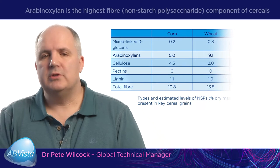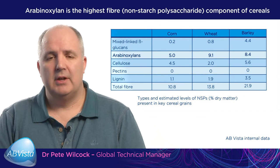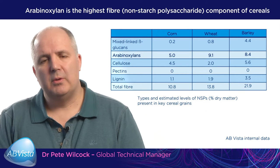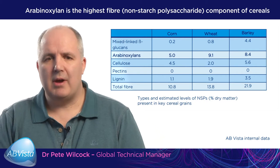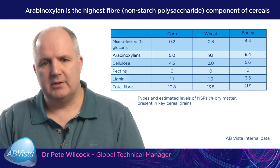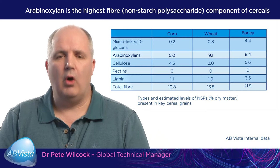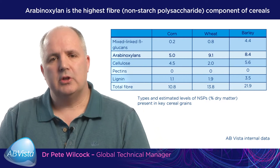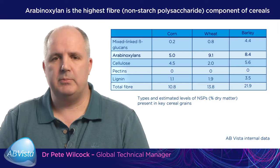Why do we want to use xylanases? If you look at the NSP contents of different feedstuffs, we can see that in corn, wheat, and barley, the arabinoxylan contents are the highest NSPs in these particular cereals. Therefore, in a corn-soy diet or a wheat-soy diet, the composition of that NSP content will be around 40 to 50 percent arabinoxylans.